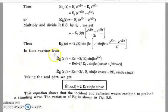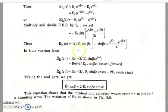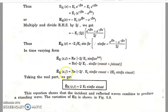In the time-varying form, the resultant electric field is the real part of −2j · Ei · sin(βz) · e^(jωt). Expanding e^(jωt) as cos(ωt) + j·sin(ωt) and taking only the real part, the resultant electric field becomes: Er(z,t) = 2Ei · sin(βz) · sin(ωt). This equation shows that the incident and reflected waves combine to produce a standing wave.